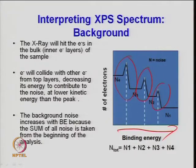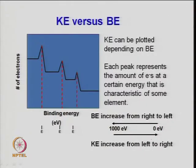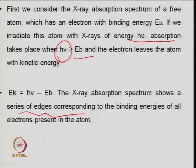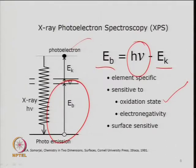The background noise increases with binding energy because the sum of all noise is accumulated from the beginning of the analysis. The more electrons coming out, the more as a function of binding energy. Binding energy increases from right to left in the spectrum, and kinetic energy increases from left to right — the equation: E_b = hν − E_k means when kinetic energy increases, binding energy decreases.